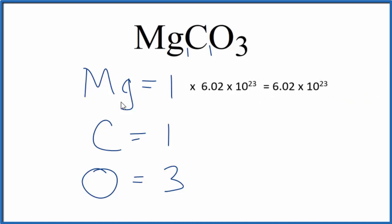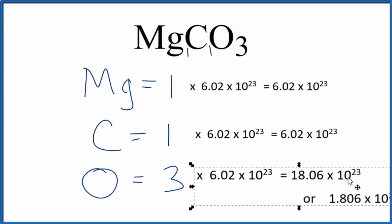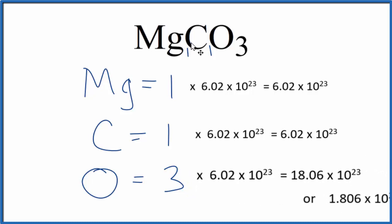So that gives you the number of magnesium atoms in one mole of magnesium carbonate. Same for the carbon. We have one carbon atom, we multiply it by Avogadro's number. For oxygen, since we have those three oxygen atoms, we're going to multiply that by Avogadro's number as well. And that'll give us the number of oxygen atoms here in MgCO3.